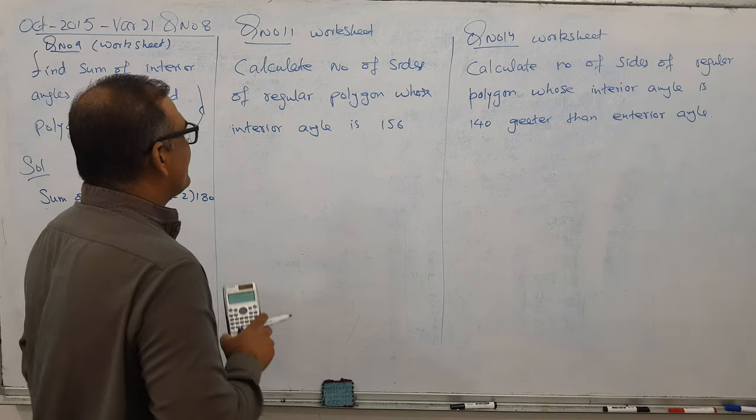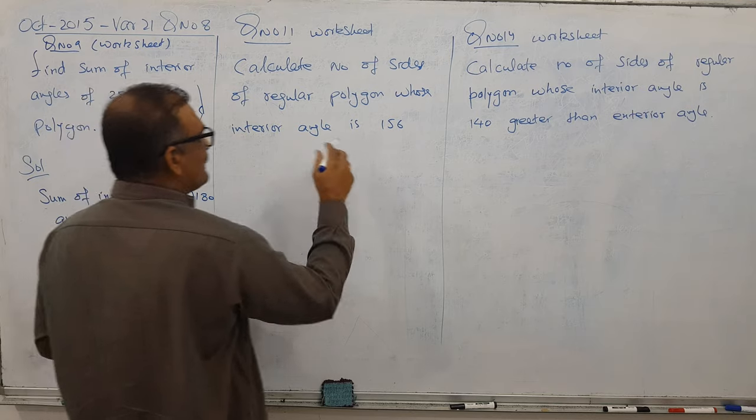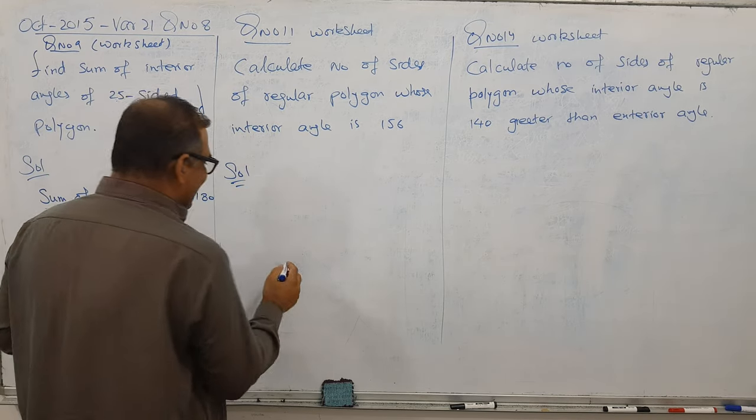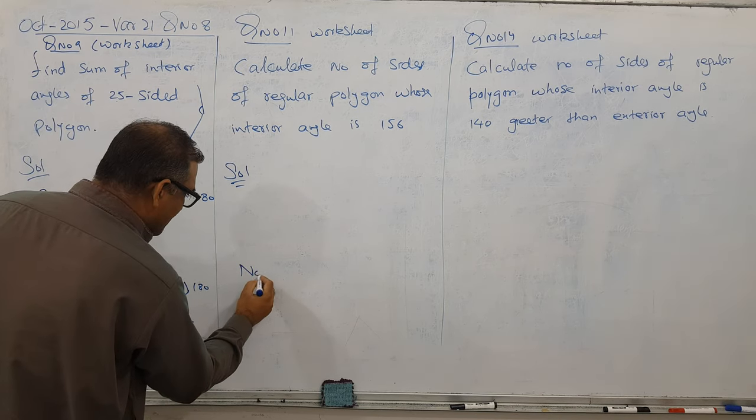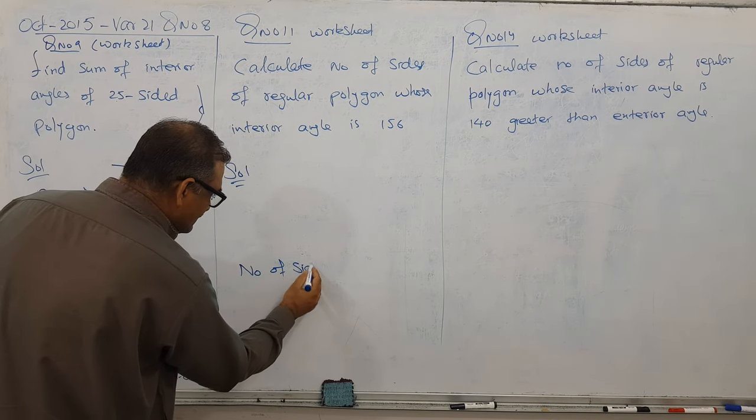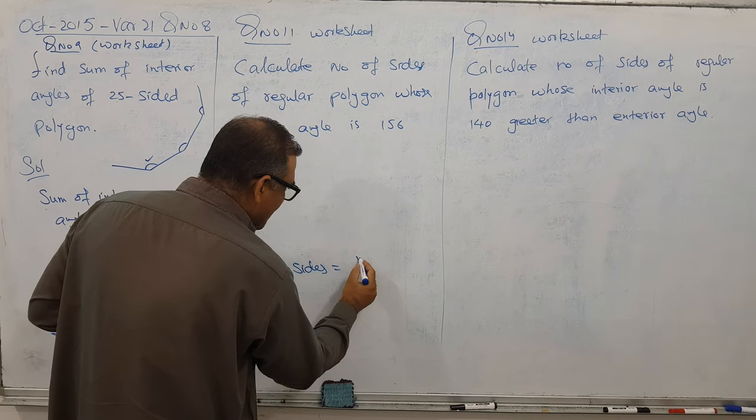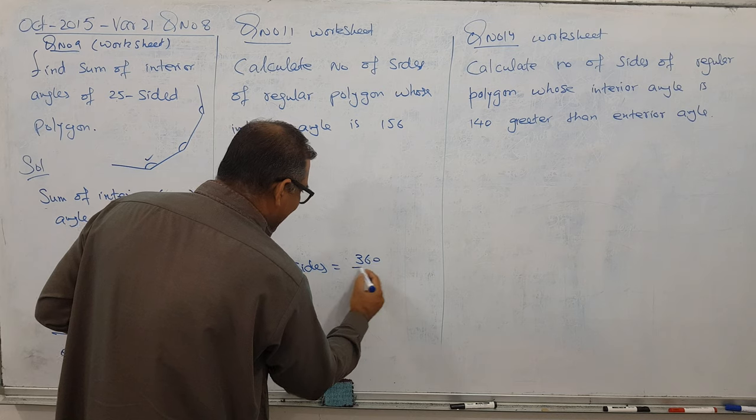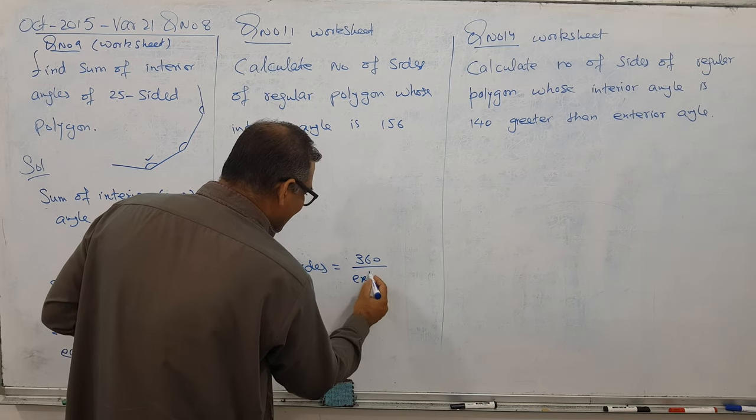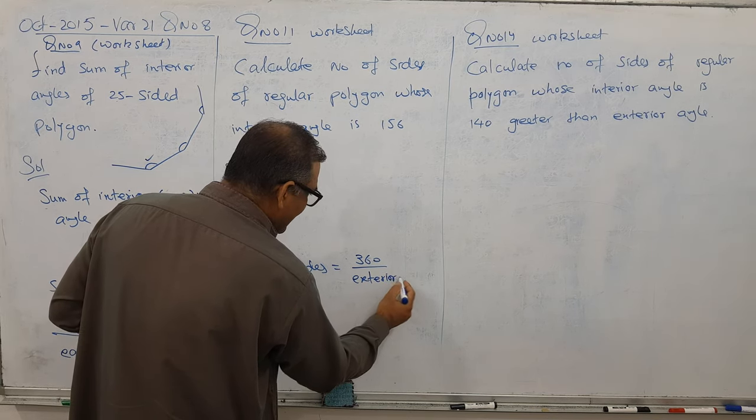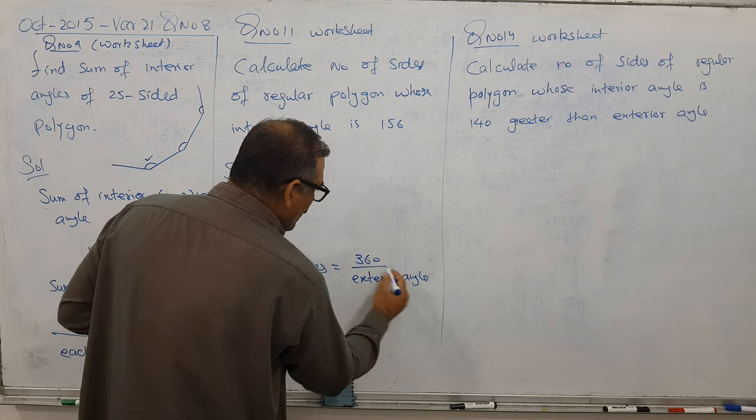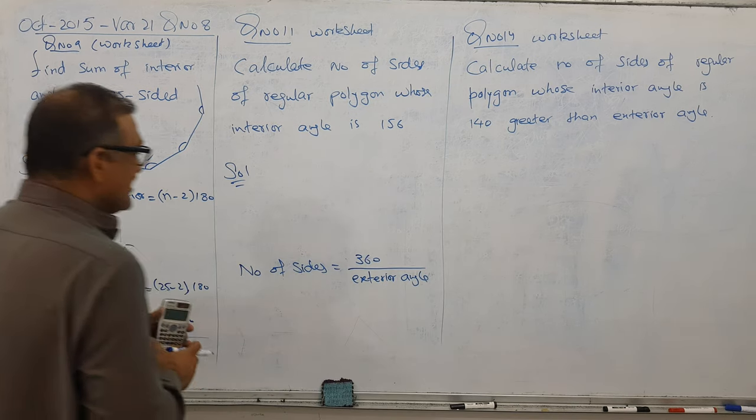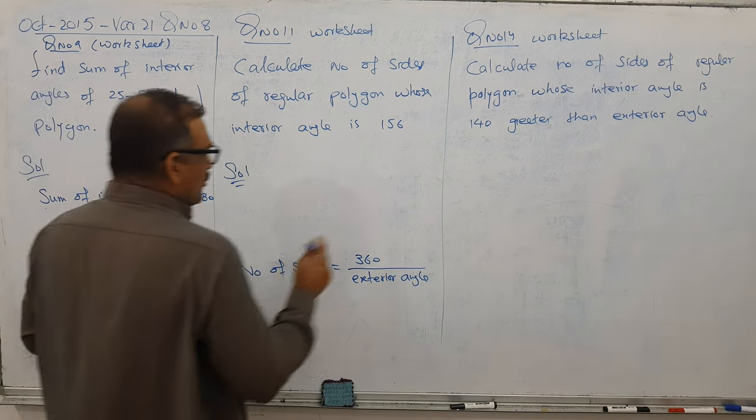Next question: calculate the number of sides of a regular polygon whose interior angle is 156 degrees. We have a special formula, but that formula is for exterior angles. The formula is: number of sides equals 360 divided by exterior angle.